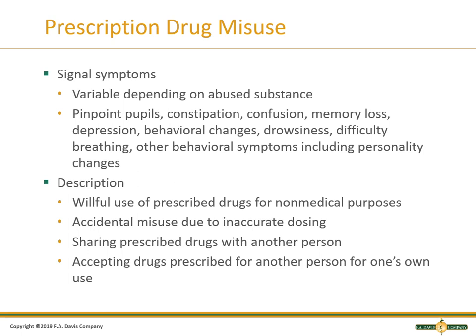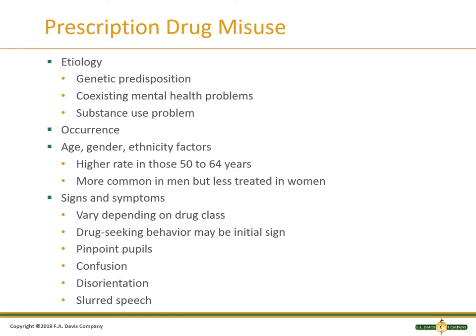Prescription drug misuse — signal symptoms are variable: pinpoint pupils, constipation, confusion, memory loss, depression, and behavioral symptoms. This is the willful use of prescribed drugs for non-medical purposes. Accidental misuse can be due to inaccurate dosing, sharing with another person, or accepting drugs prescribed for someone else. There is a genetic predisposition for this. Coexisting mental health problems may lead someone to want a quick fix. It's often associated with substance abuse including recreational drugs and alcohol. Age, gender, and ethnicity show a higher rate in 50 to 64 year olds; it's more common in men, but it's not treated as much in women because of the stigma — the expectation that women manage everything and don't want to admit it.